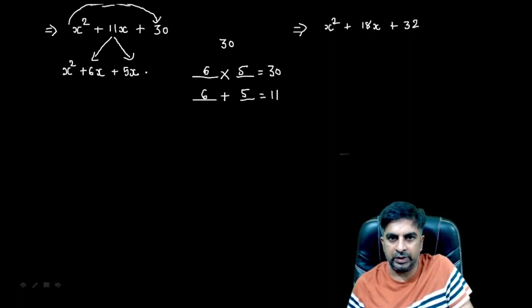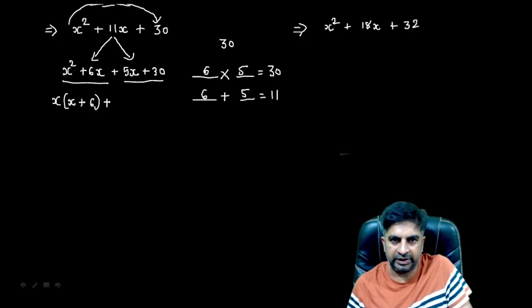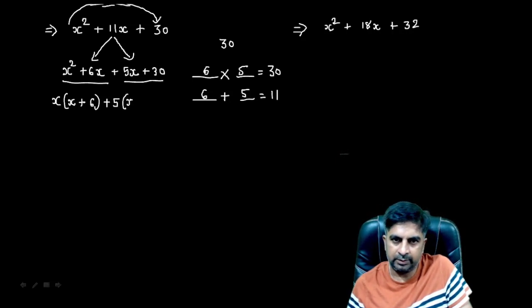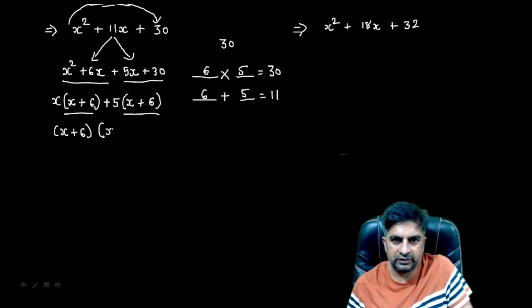In front we have x² and at the end we have 30. Now we just need to find the common factor. From x² + 6x, we take x as common, leaving x + 6. From 5x + 30, we take 5 as common — since 5 × 6 = 30 — leaving x + 6. Now x + 6 is common in both terms, so we take it out, and our remaining factor is x + 5. So the factors are (x + 6)(x + 5).